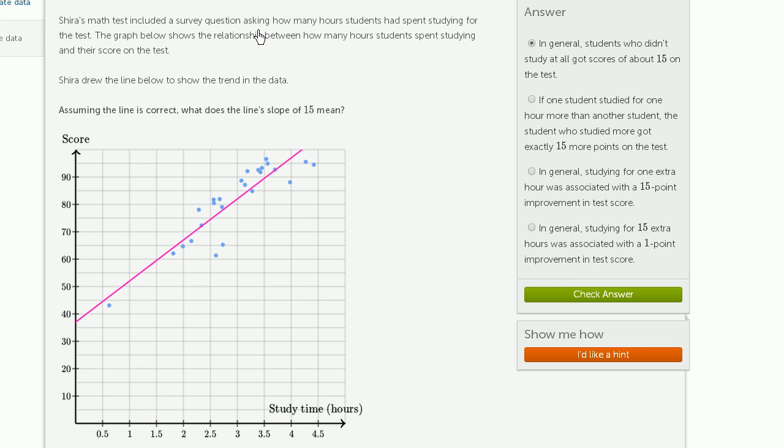Shira's math test included a survey question asking how many hours students had spent studying for the test. The graph below shows the relationship between how many hours students spent studying and their score on the test. Shira drew the line below to show the trend in the data. Assuming the line is correct, what does the slope of 15 mean?